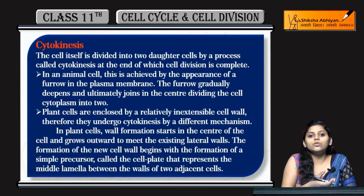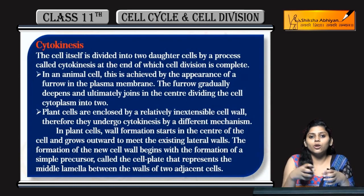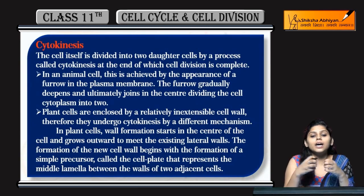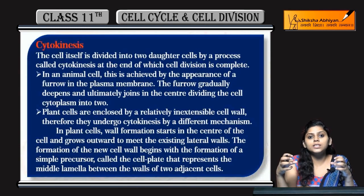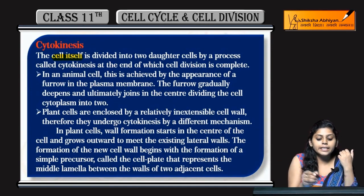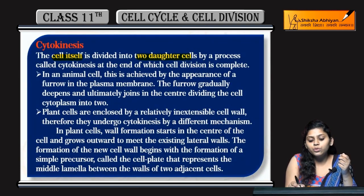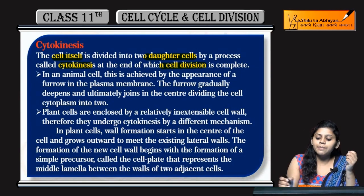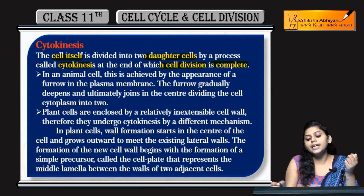Now we have seen what happened in the telophase — the nuclear membrane reformed at the poles of the chromosomes. Now this is all done, but the cell will divide and two daughter cells will be made. The cytoplasm will divide when the cell itself divides into two daughter cells by a process called cytokinesis. Then we will say that cell division is complete.